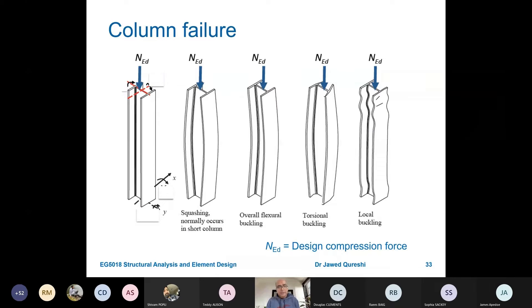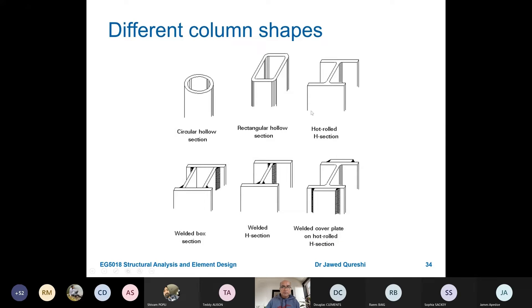These are various column failures. The first is undeformed column. The second is squashing, which happens in short columns, then overall flexural buckling. You can see some torsional buckling as well. If the load is not applied at the center of the column at the shear center, it can cause torsion. You can see finally local buckling is happening. You can use any shape for columns. You don't have any restriction for compression members. I mean, it's not just columns.